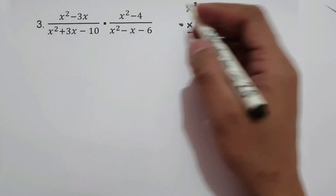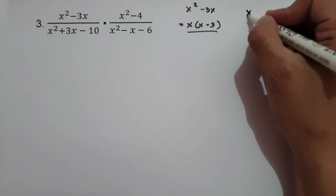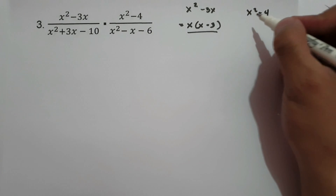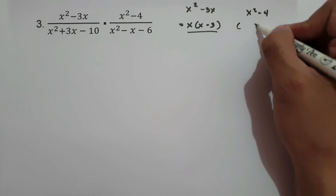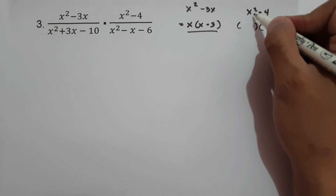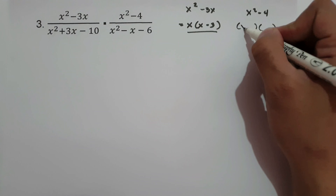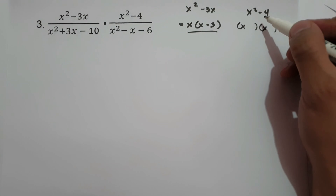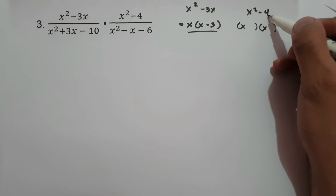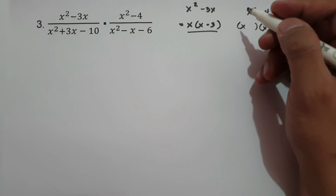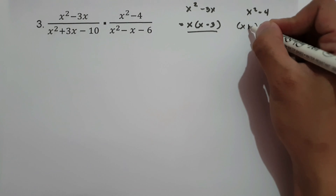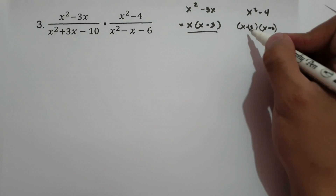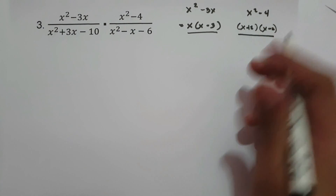For x² − 4, we need two numbers that multiply to −4 and add to 0. That is +2 and −2. So x² − 4 factors as (x + 2)(x − 2).